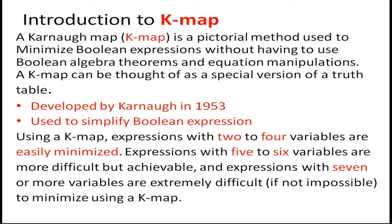It is basically used to simplify the Boolean expression. When we use a K-map for expressions of 2, 3 or 4 variables, it is very easy to minimize the Boolean expression. But if we are using a K-map for expressions containing 5, 6 or 7 variables, it becomes extremely difficult. It is not impossible but the difficulty level is much more. In this session we will only be focusing on 2, 3 and 4 variable K-map techniques.